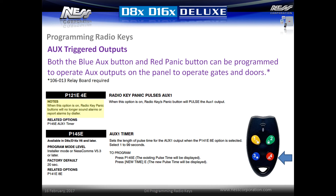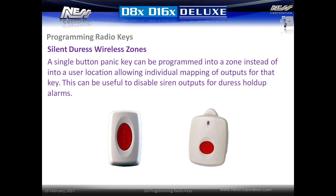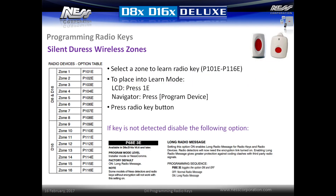Note that the red panic button requires a press and hold for one second to activate; this is built into the radio key and cannot be disabled. A single-button panic key can be programmed into a zone instead of a user location, allowing individual output mapping for that particular key. This can be useful to disable siren outputs for duress or hold-up alarms. To learn a radio key into a zone, select a free zone between p101e and p116e, place the system into learn mode by pressing 1e on an LCD keypad or the program device button on a Navigator keypad, then press the radio key button to learn. If the radio key is not learned, you may need to disable option p68e 3e, which disables the long encrypted radio message feature.